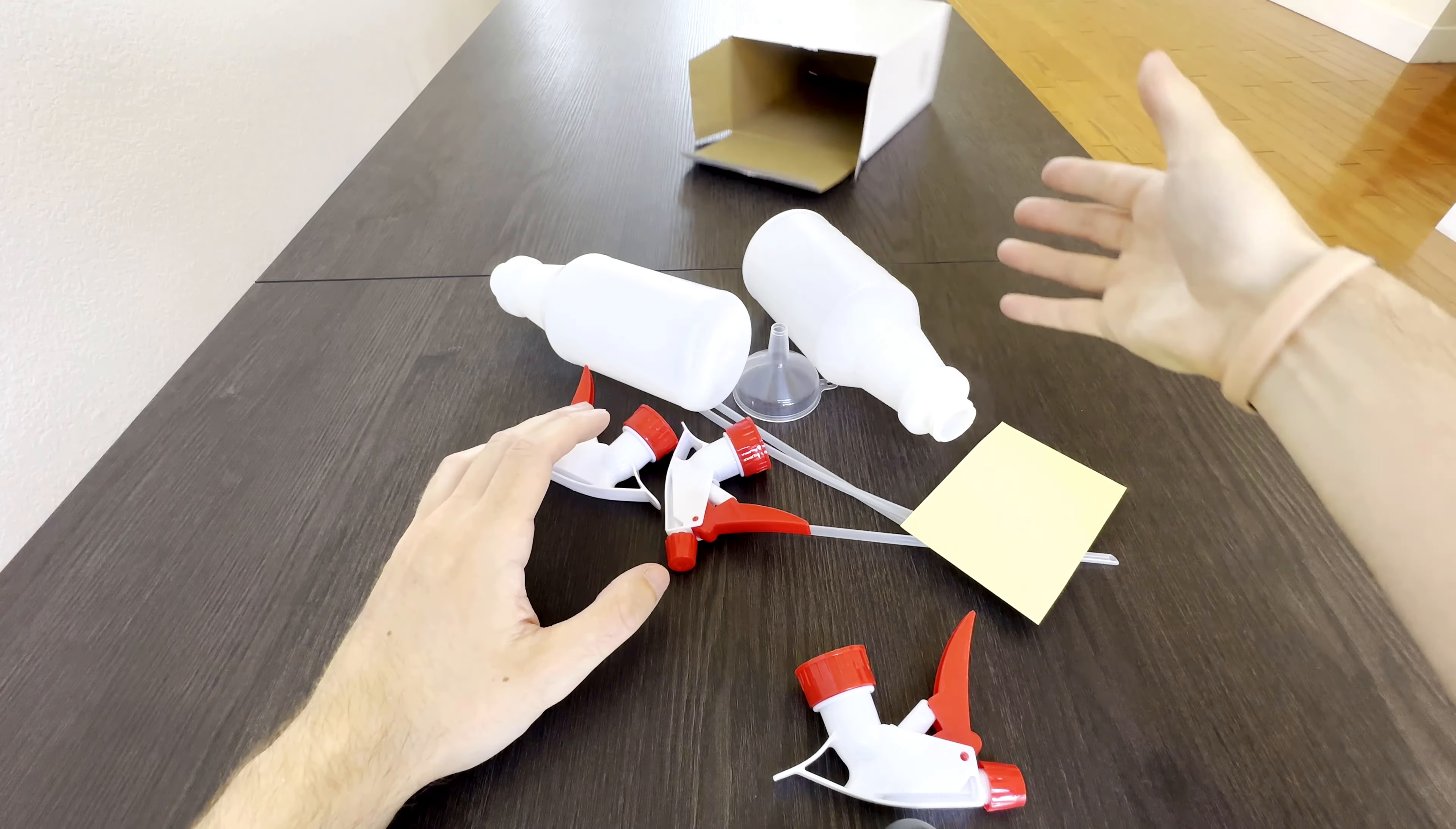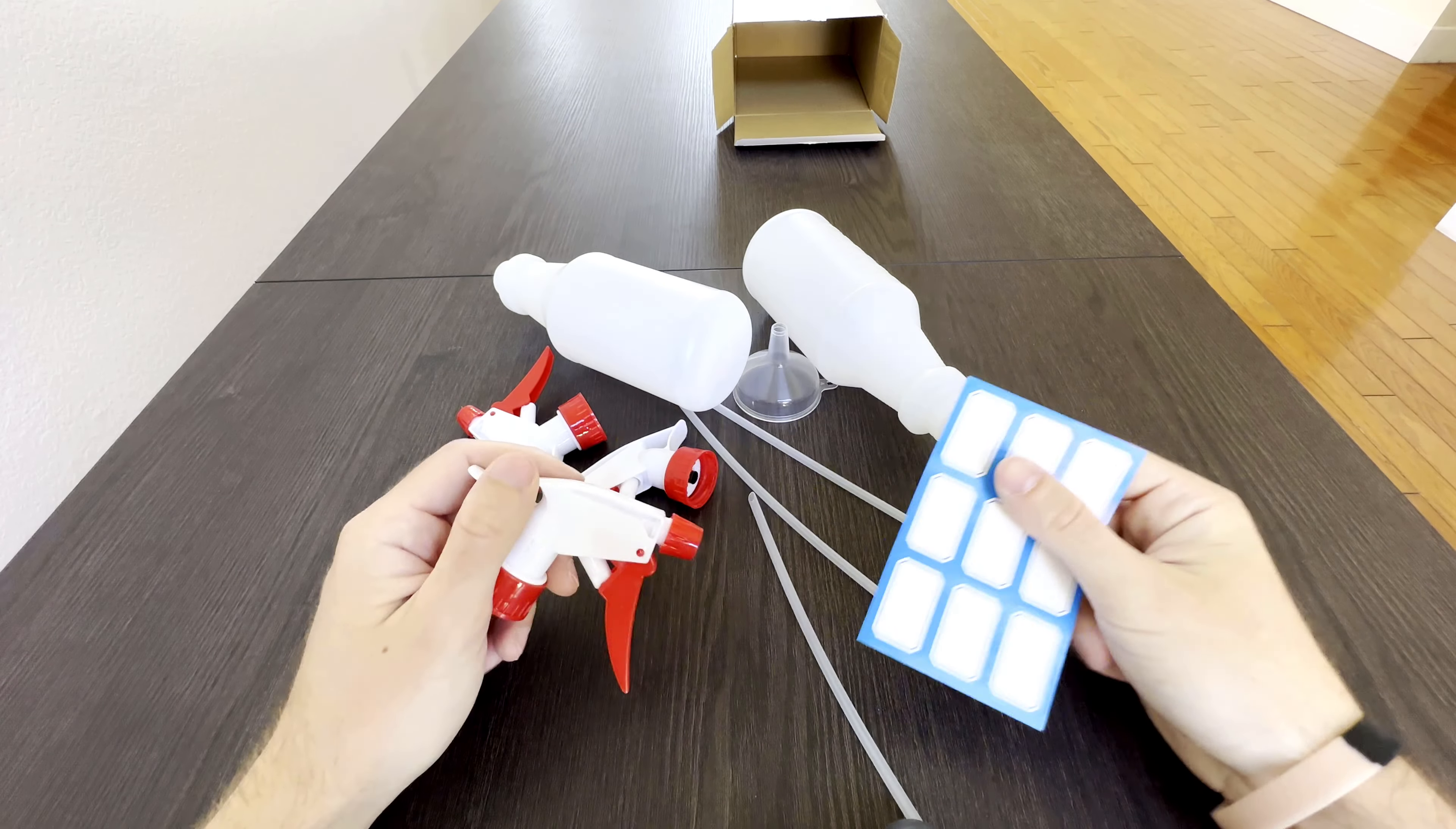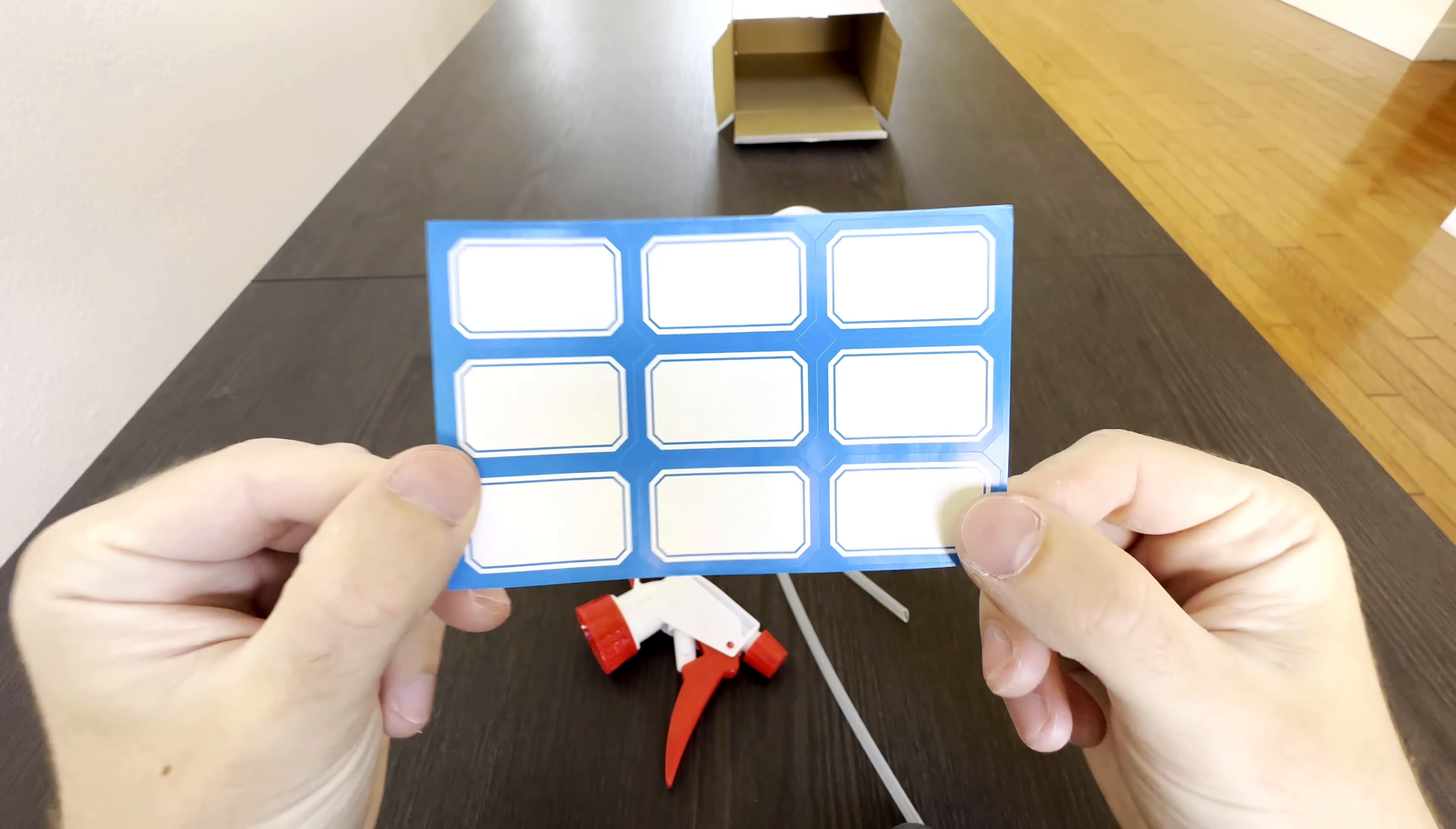The bottles come in 3 pieces: bottle, nozzle, and straw. My 2-pack came with a small funnel for easy filling as well.